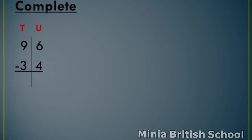The smallest number is three. So, close your fingers and count after three: four, five, six, seven, eight, nine. How many fingers? Six. So, write number six under tens. The answer is 62.